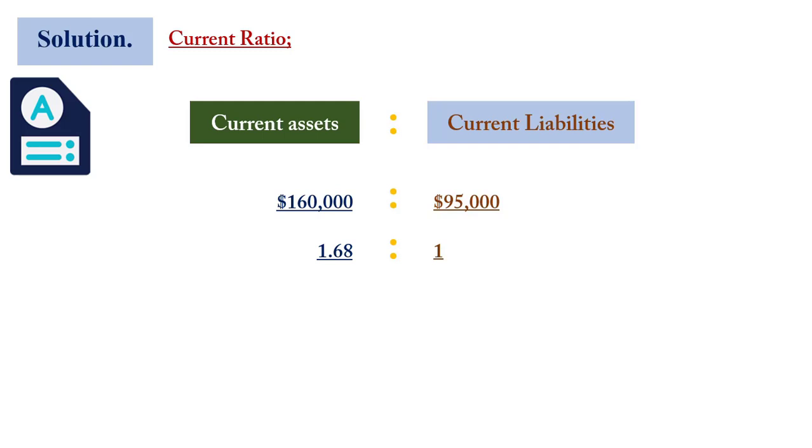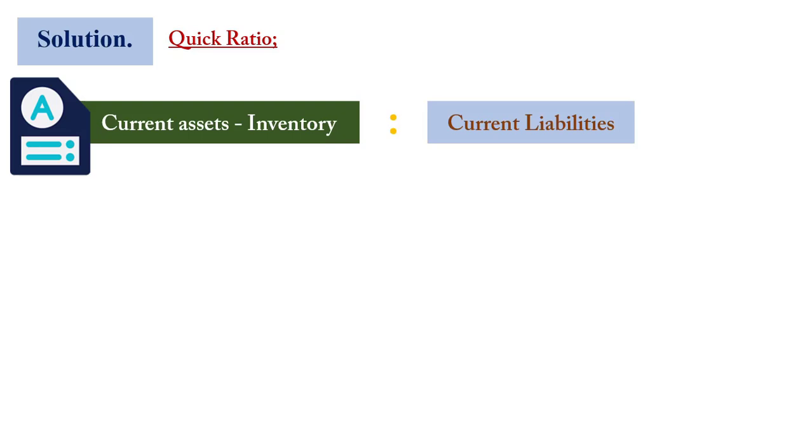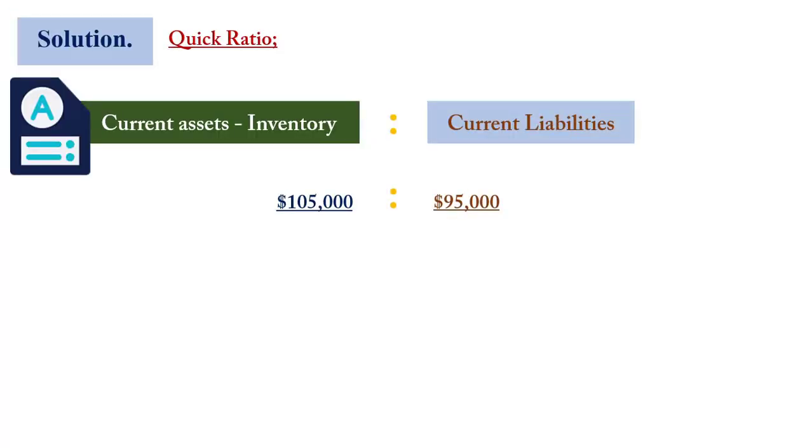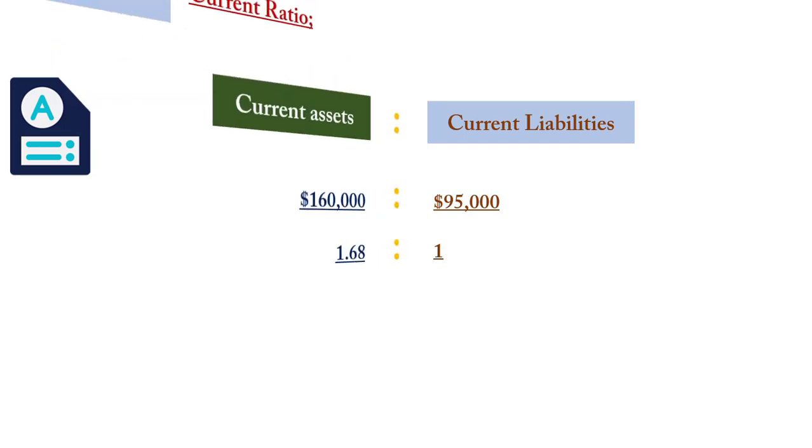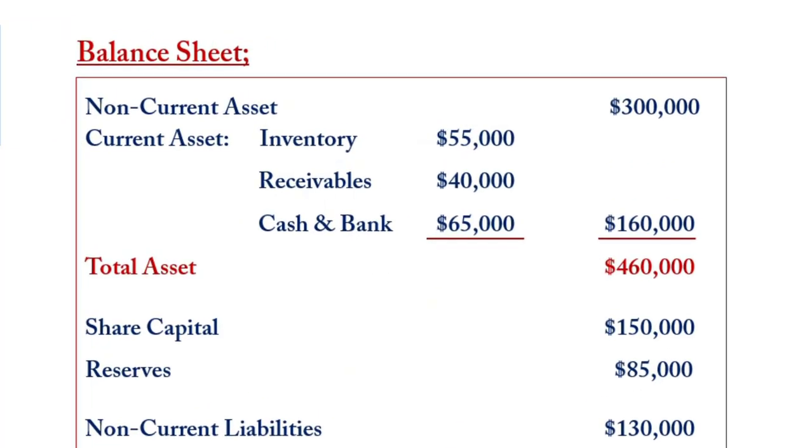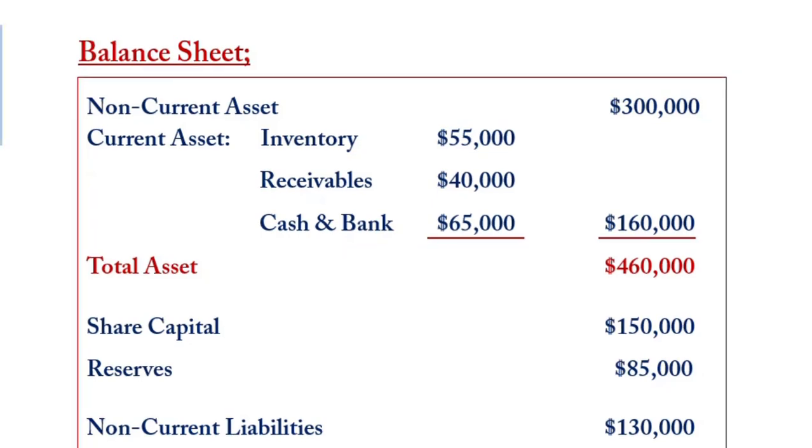When we come to the quick ratio, the formula is current assets less inventory being matched with current liabilities. The current asset less inventory will give you $105,000, which is the receivables of $40,000 and the cash and bank of $65,000. Then the current liability stays constant of $95,000, which is the payables and the accruals. So the ratio is going to be 1.1 to 1. It also means that there is enough more liquid assets to settle the current liabilities. So the current ratio of 1.68 to 1 meant that more of the current assets is found in areas other than inventory. So if you look at the balance sheet, if you combine the receivables and the cash and bank, it is more than the value of the inventory, so the business is more liquid.